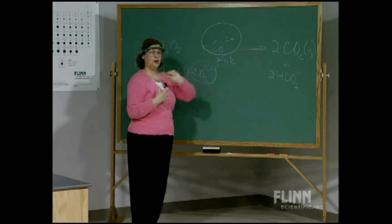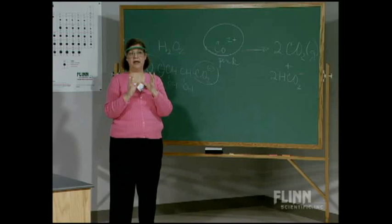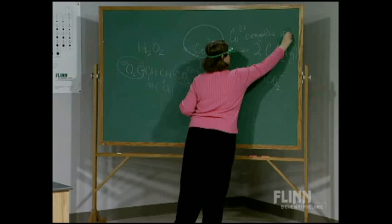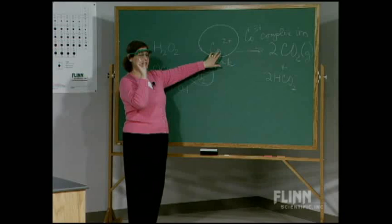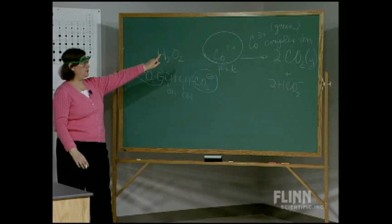That pink color was the original color and the final color. What was the intermediate color? When the reaction was most vigorous it was a bright kelly green, and that is probably a cobalt 3+ complex ion. What happens is at first the hydrogen peroxide oxidizes the cobalt 2+ to cobalt 3+, and that forms a complex with the tartrate ion.